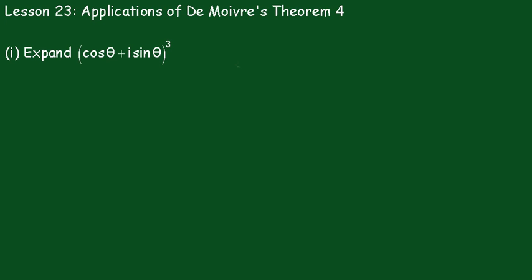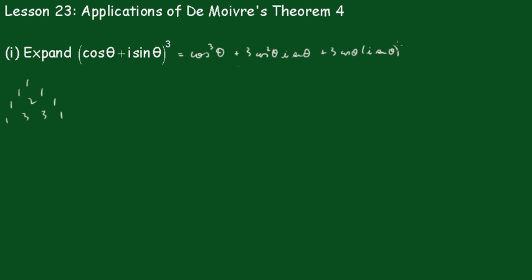Lesson 23: Applications of De Moivre's Theorem, number 4. In part 1, we have to expand (cosθ + i sinθ)³ using Pascal's triangle. Using the 1-3-3-1 result, we get cos³θ + 3cos²θ · i sinθ + 3cosθ · (i sinθ)² + (i sinθ)³.